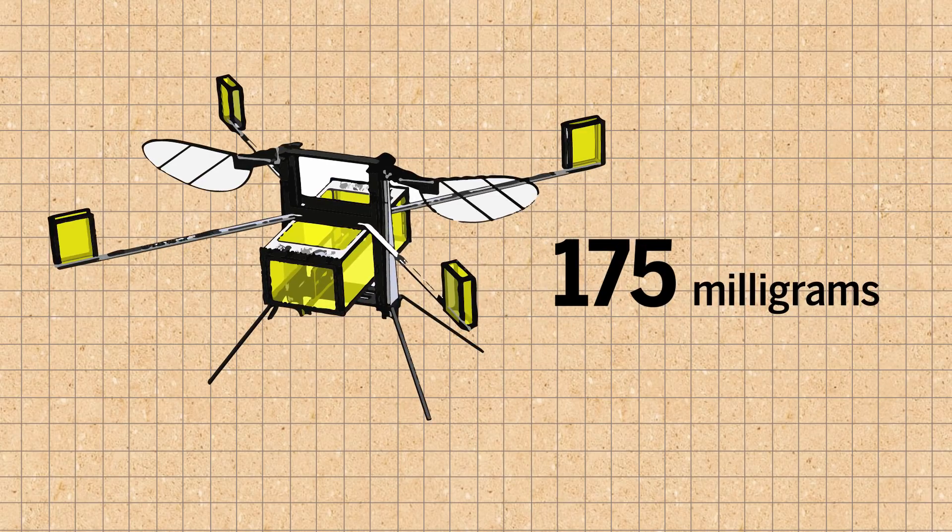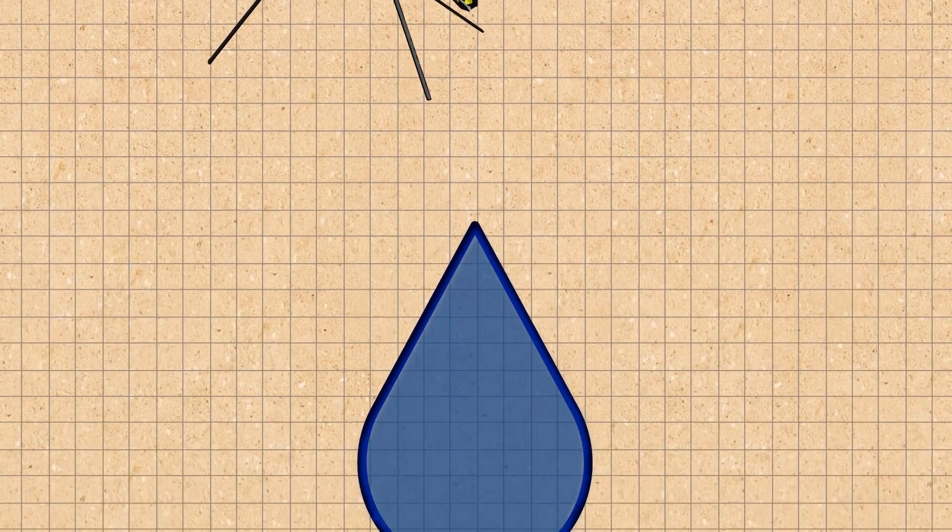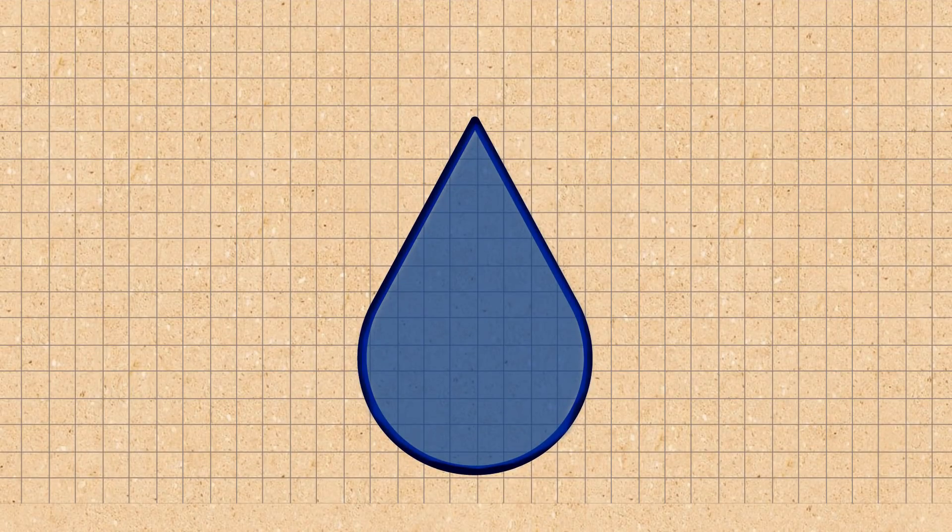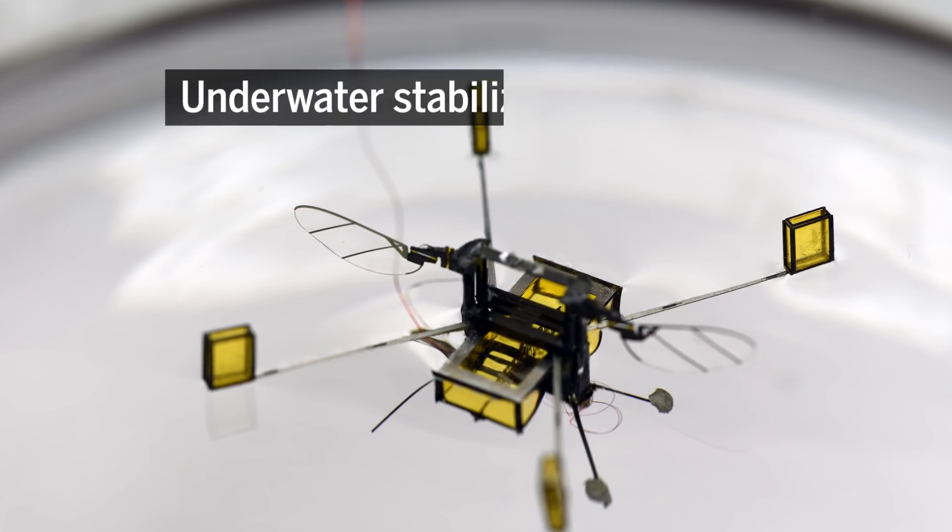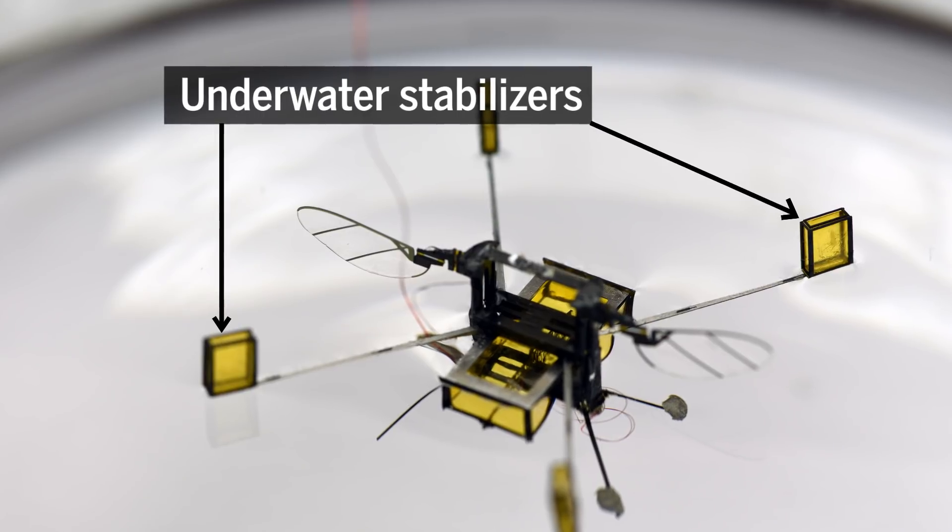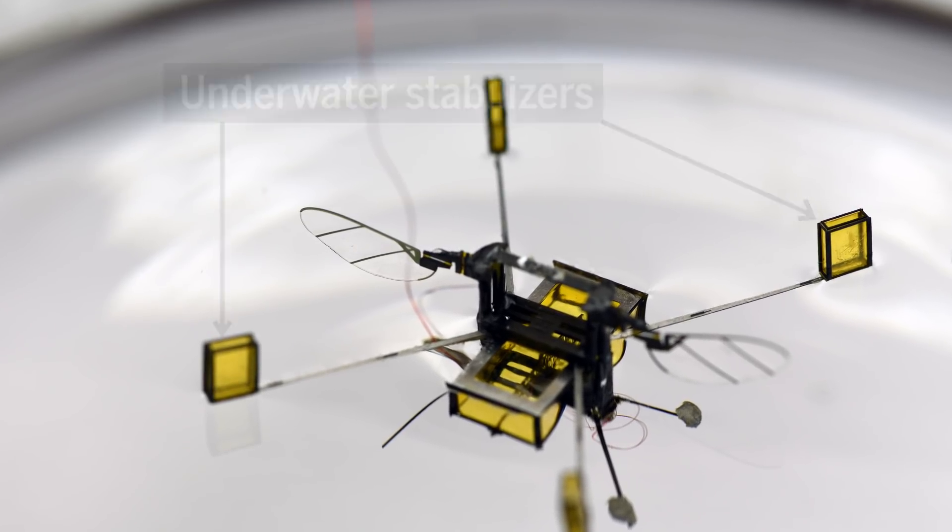First, it needed help staying oriented while underwater. The bot only weighs 175 milligrams, about the same as a raindrop. So, to keep it from losing control, they added underwater stabilizers and slowed down the wing beats.